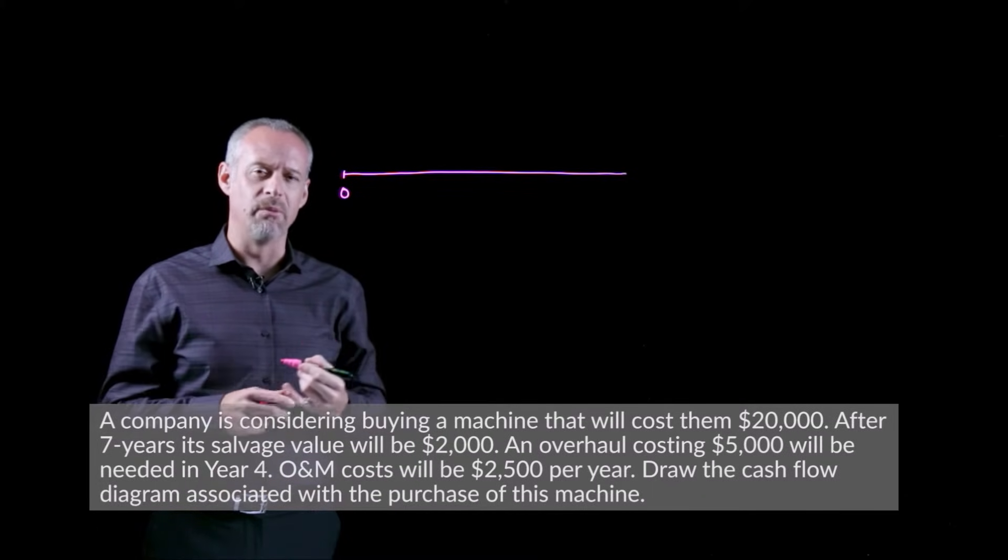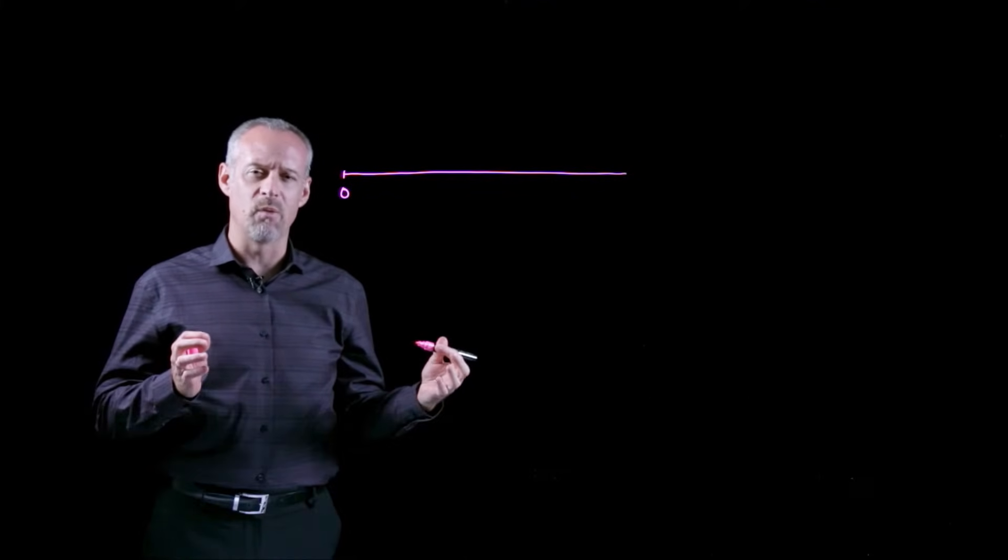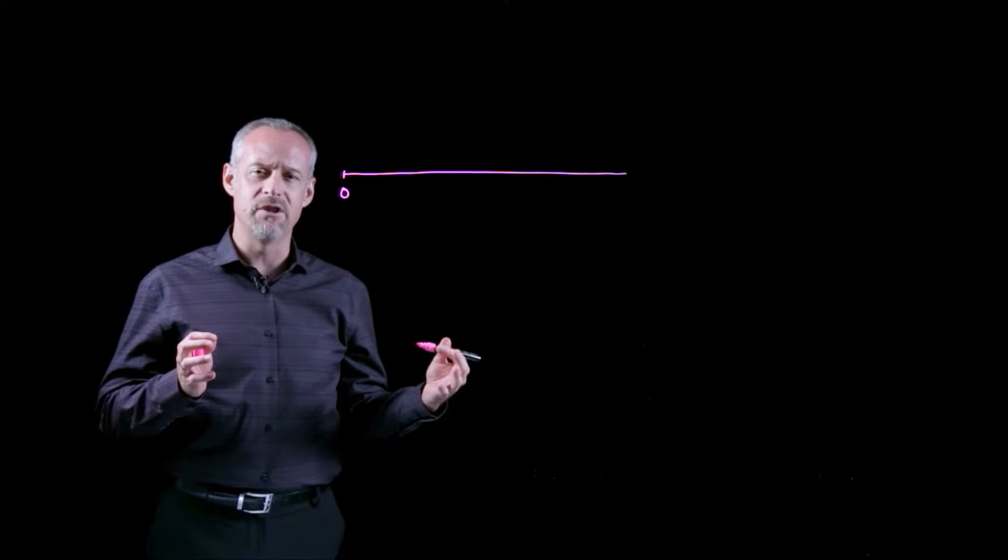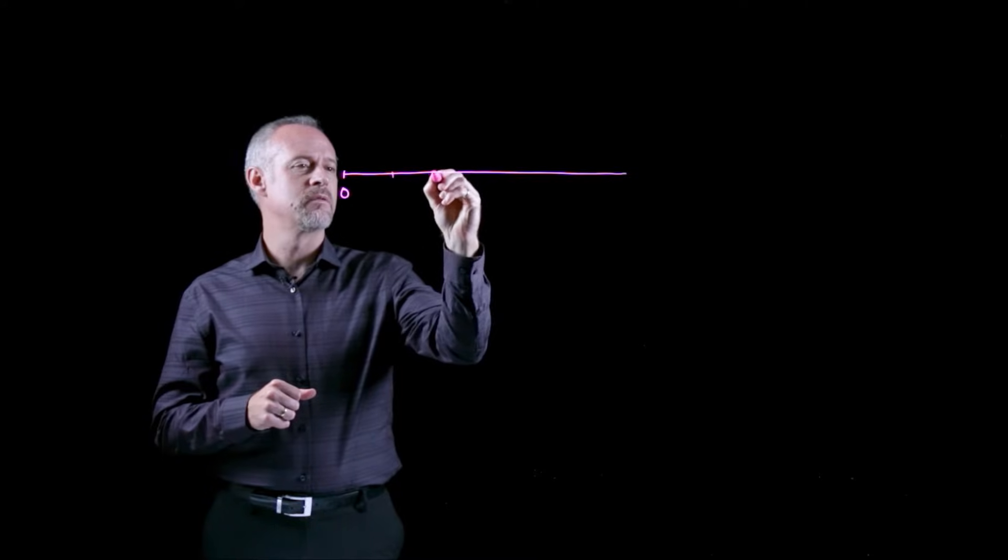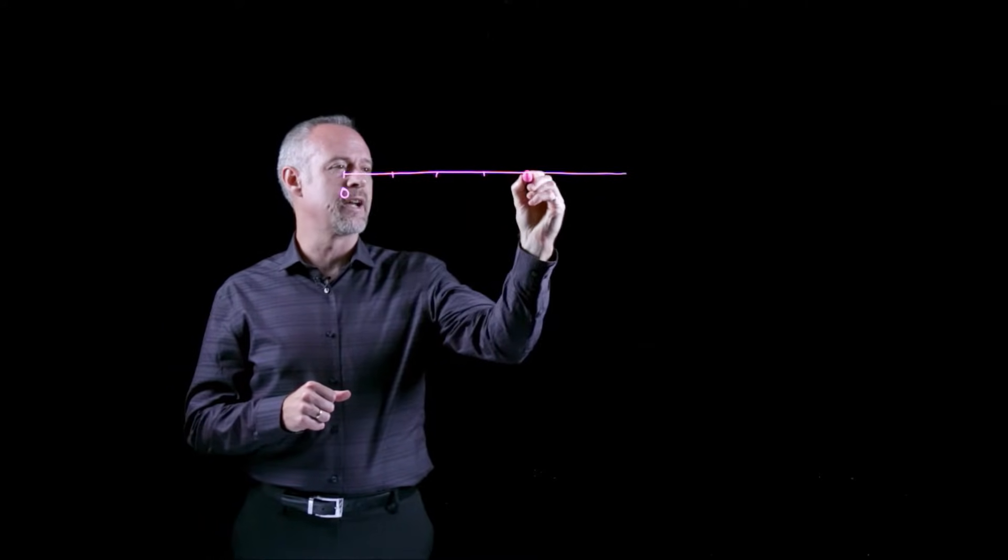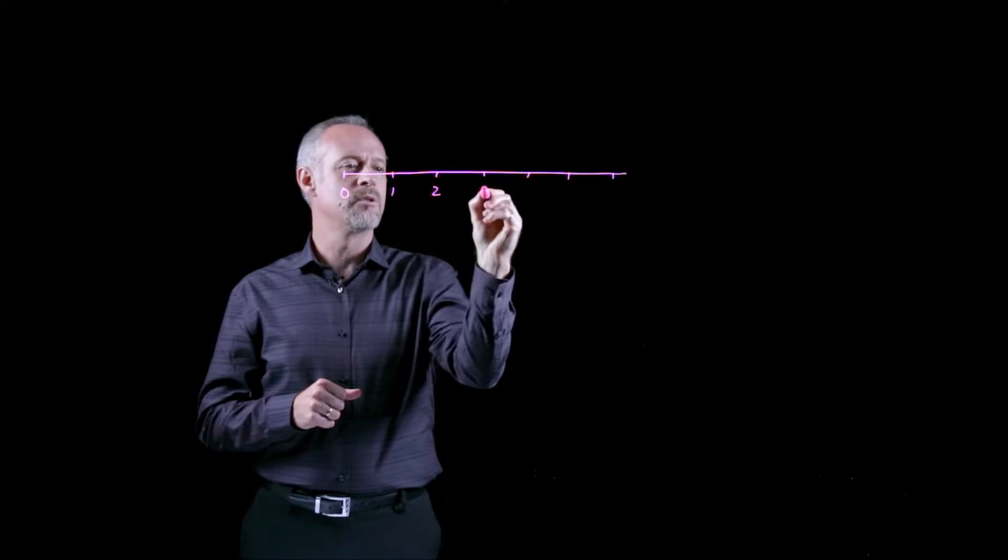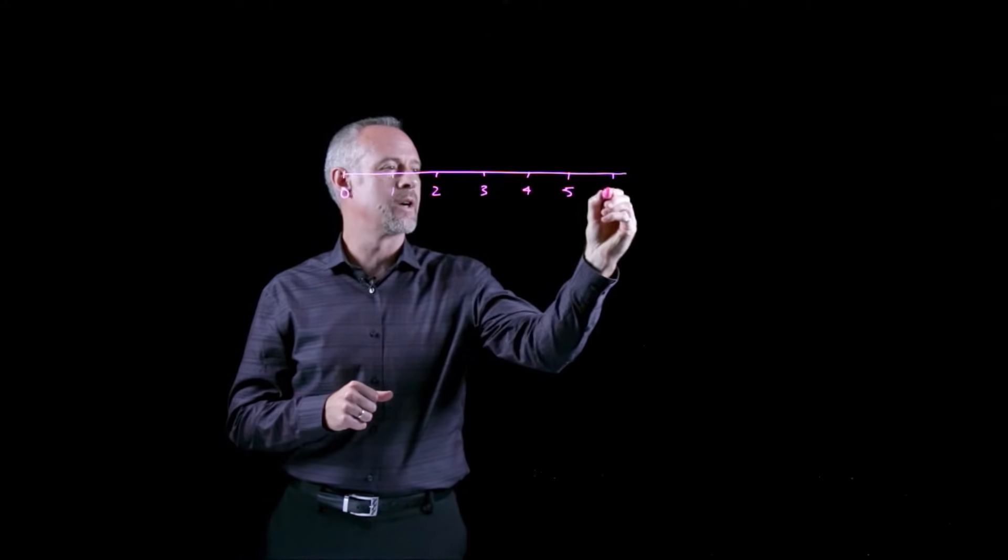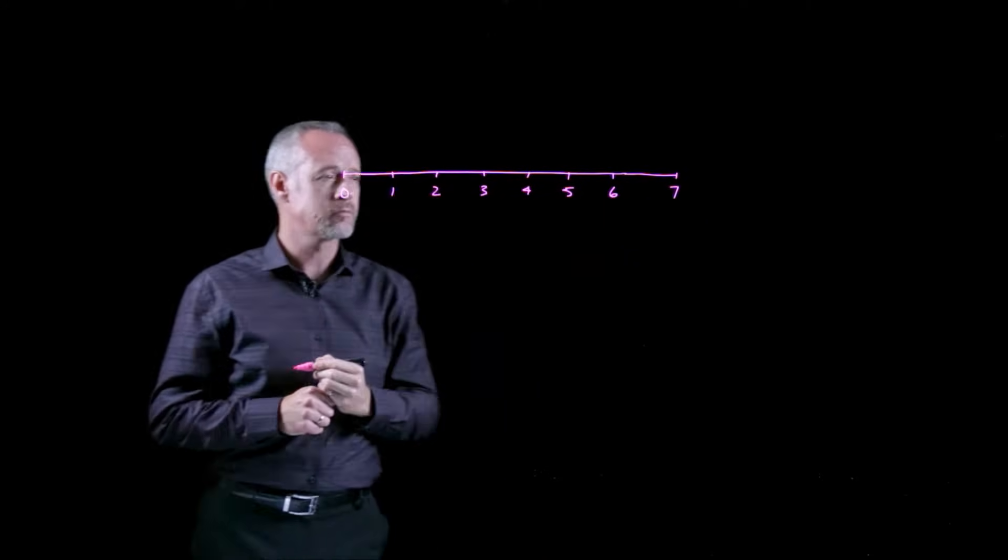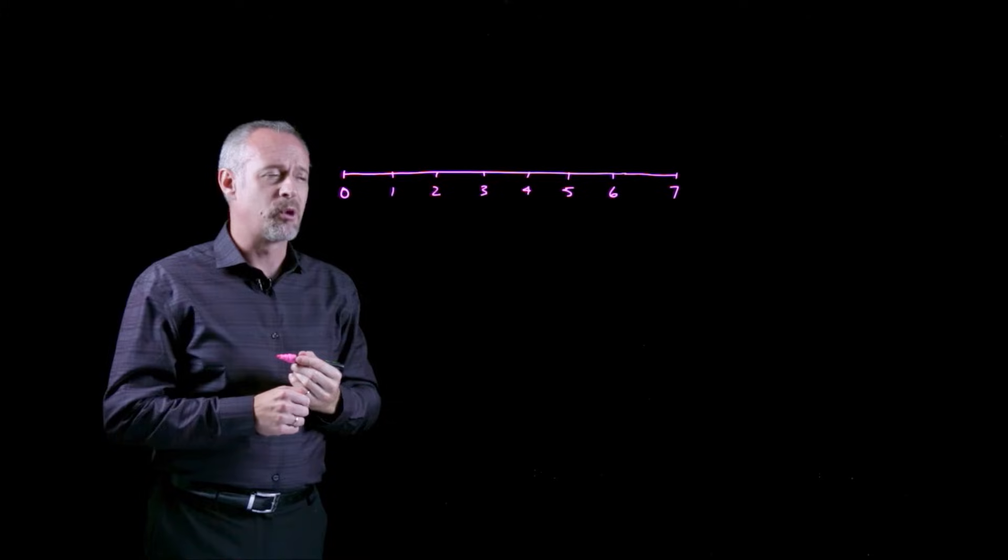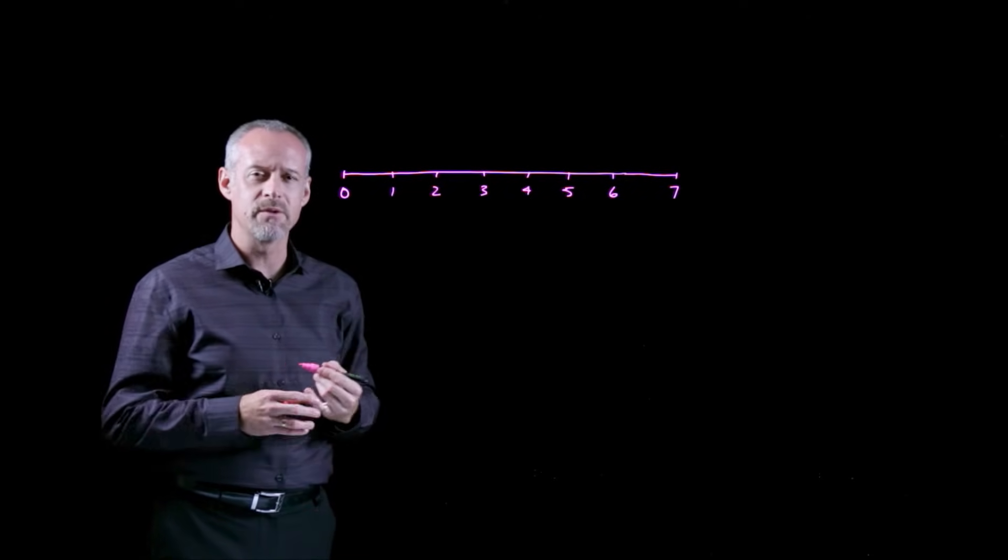In this problem we can see that the total time that we need to model is seven years. So what I do is I draw a line that has seven years on it and we just draw it like this: one, two, three, four, five, six, seven. And we see from the problem that this company would like to purchase a piece of equipment for twenty thousand dollars.